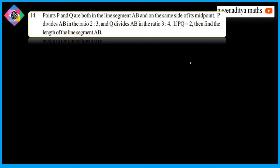By the problem, this is a line segment AB and let point M be the midpoint. The points P and Q lie on the same side of the midpoint. So this is P and this is Q.